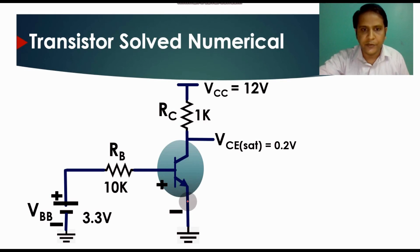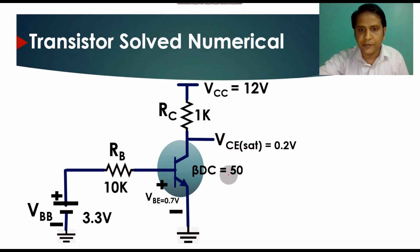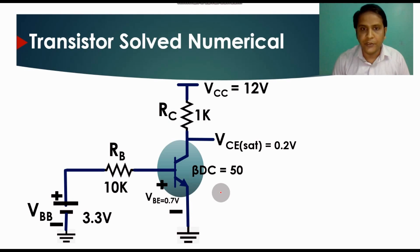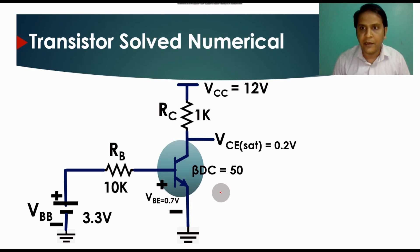The emitter is grounded. The base-to-emitter saturation voltage VCE(sat) is 0.2 volt, beta DC equals 50, and VBE is 0.7 volt. Our objective is to find out if the transistor is working in saturation mode or not, and solve the numerical to determine this.